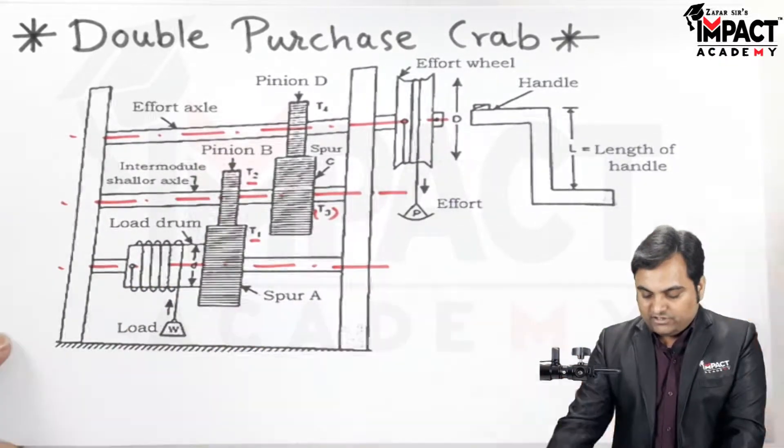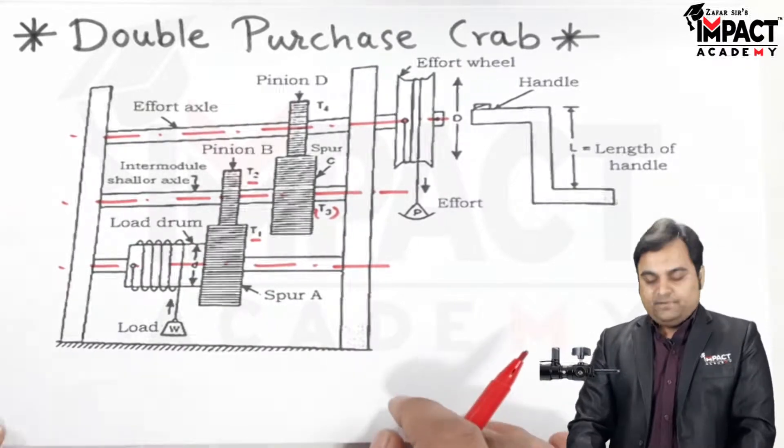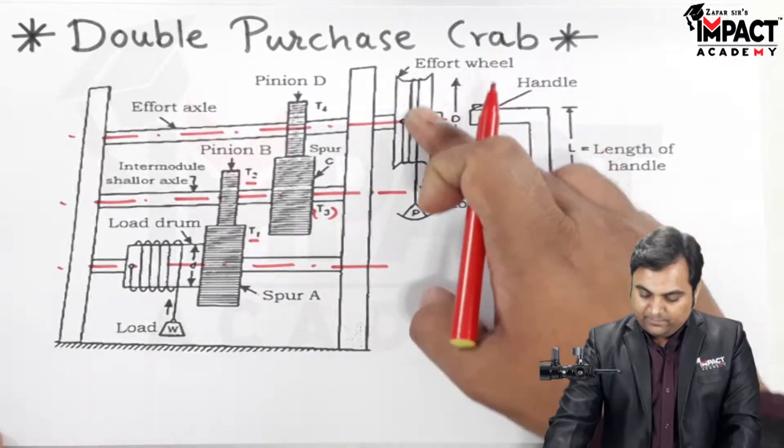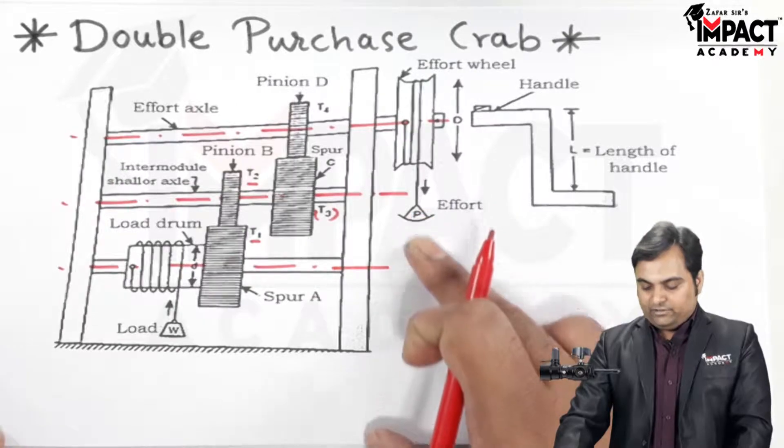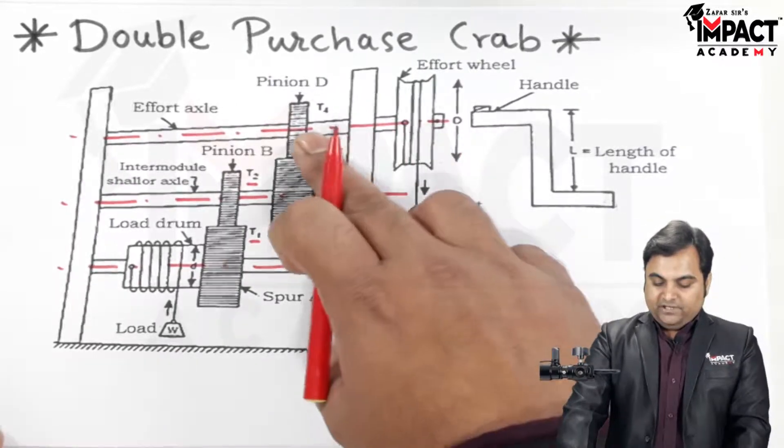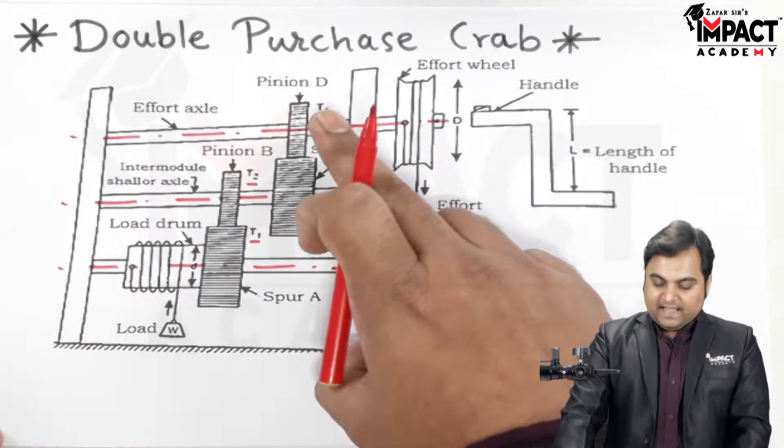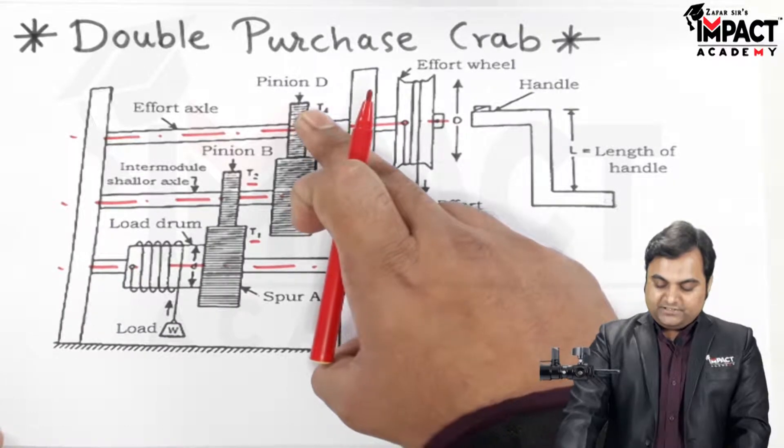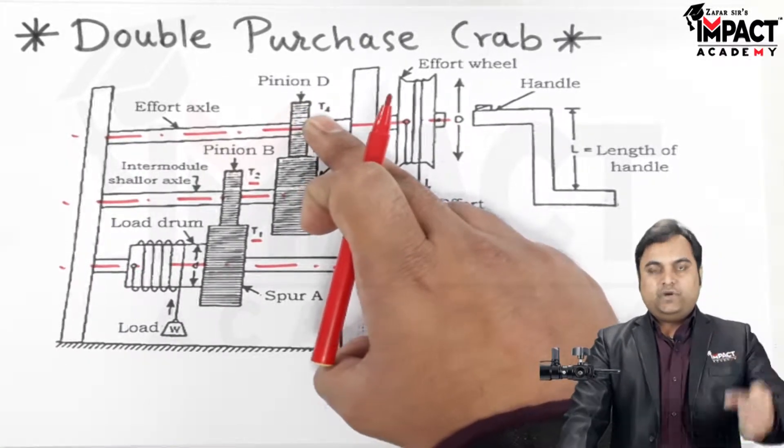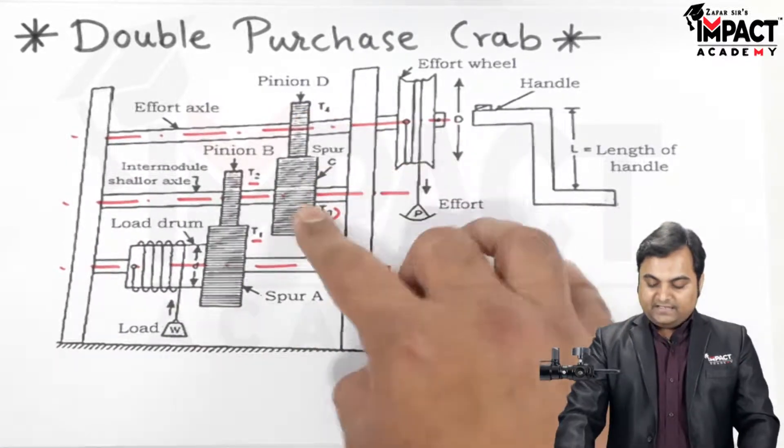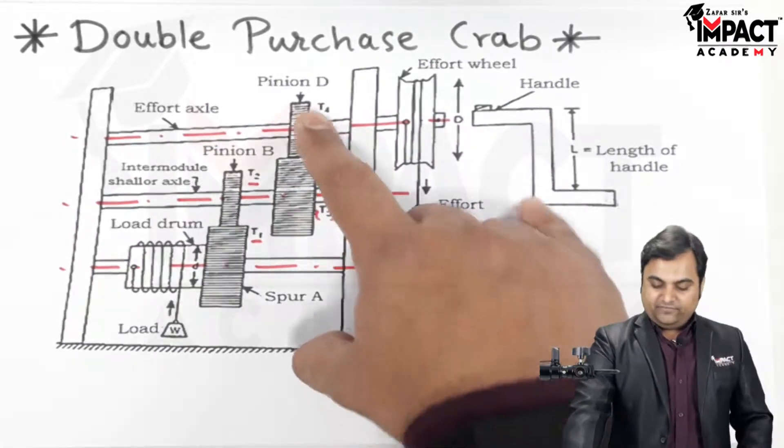So the functioning of this double purchase crab is in such a way that when we pull this rope, applying effort at the end of the effort wheel, pinion D would be rotating. When pinion D rotates, suppose it rotates in a clockwise direction.